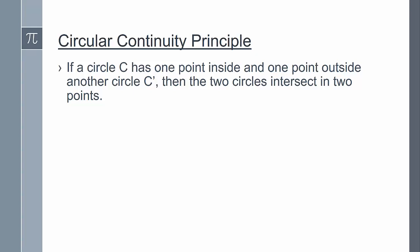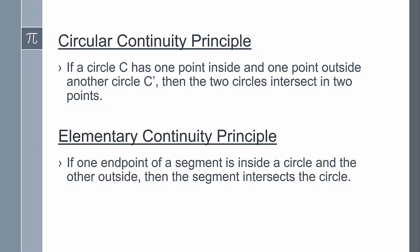Next we'll look at a useful consequence of the circular continuity principle called the elementary continuity principle. If one endpoint of a segment is inside a circle and the other outside, then the segment intersects the circle. So the idea of continuity principles is that imagine drawing a segment where you start inside a circle and go outside a circle. Then if you draw that segment without picking up your pencil, you're going to cross the circle. And that's the point of intersection.